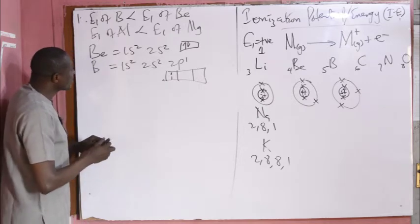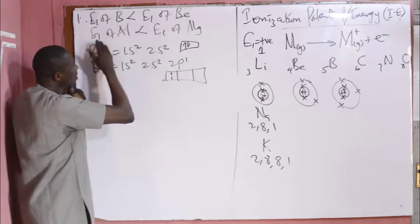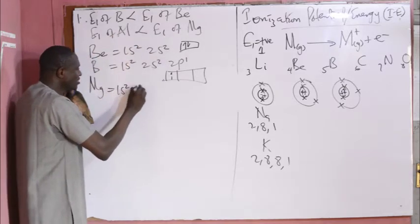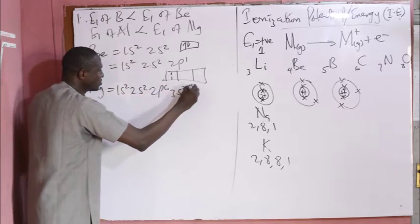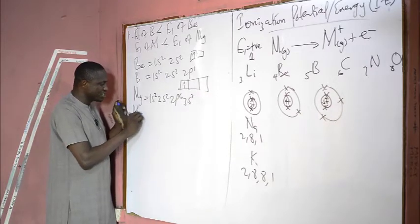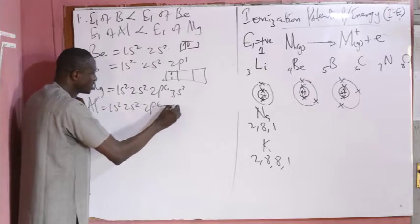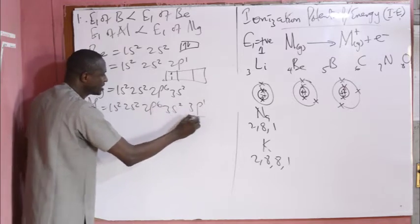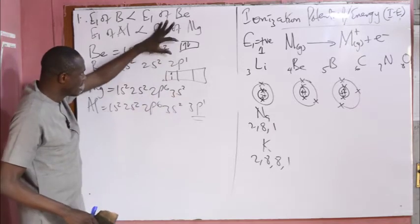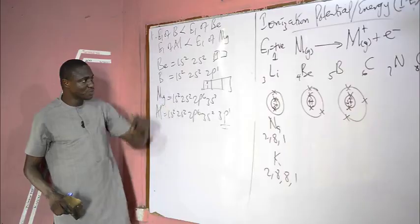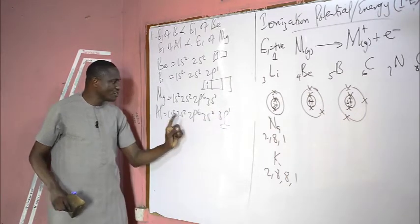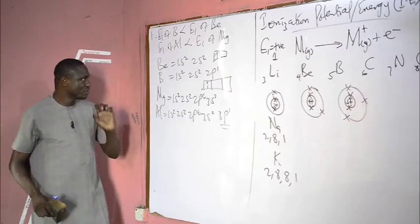The same explanation also applies to magnesium and aluminium. The electronic configuration of magnesium is 1s², 2s², 2p⁶, 3s², while aluminium is 1s², 2s², 2p⁶, 3s², 3p¹. Magnesium has extra stability due to its completely filled 3s orbital, compared to aluminium's partially filled 3p orbital. So you need lower energy to remove electrons from aluminium than from magnesium.